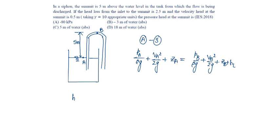Head loss is given as 2.5 meters, and the velocity head at the summit, Vb²/(2g), is given as 0.5 meters. Gamma, that is ρg, is 10 kilopascals.